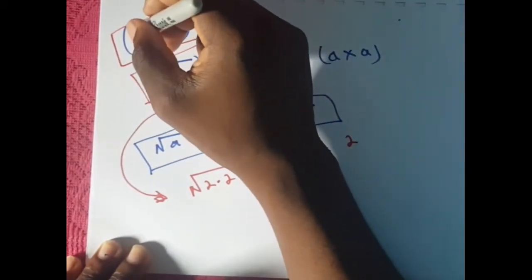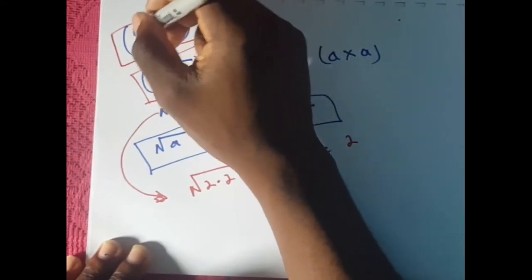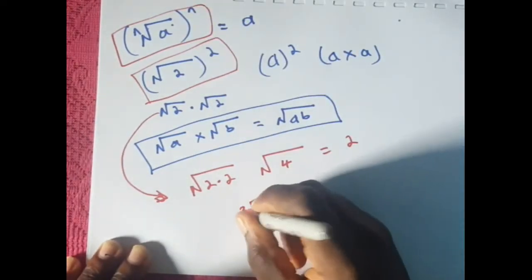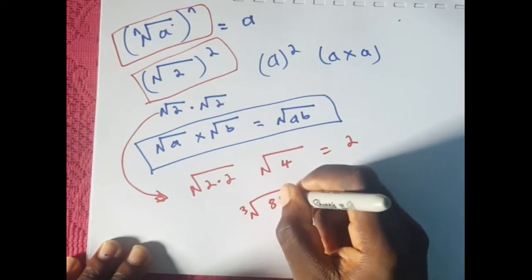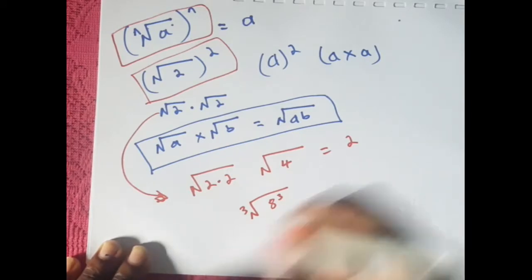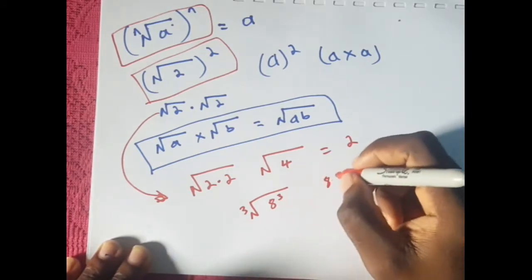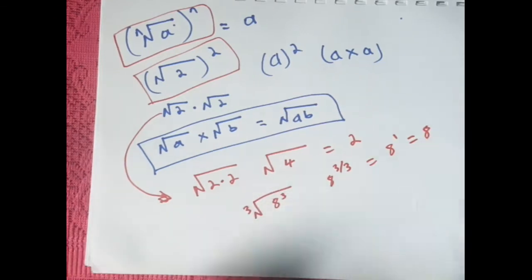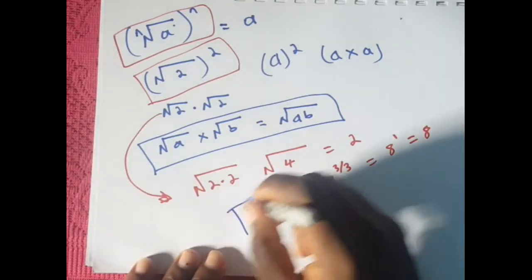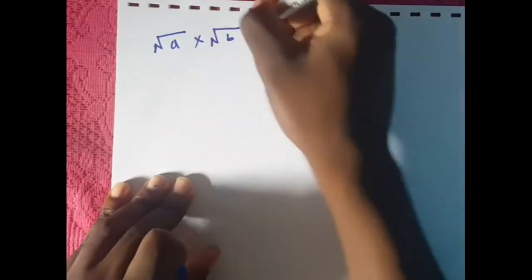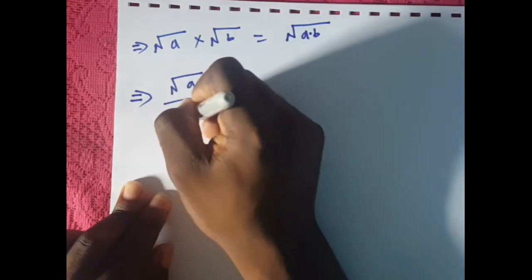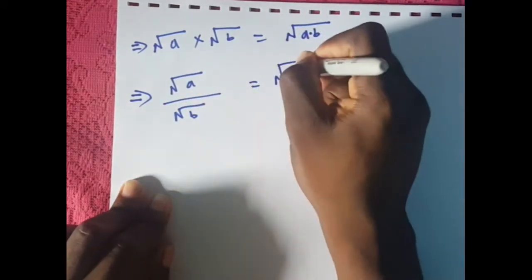If you have a root — whatever root it is — if it is raised to the power of that root, you will get what is underneath the root. The same thing goes for the cube root of 8 raised to the 3rd power: from indices you can rewrite this as 8 raised to the power of 3 over 3, which equals 8 raised to the power of 1, which equals 8. Rule 2: if you have root a times root b, it is the same as having root ab.